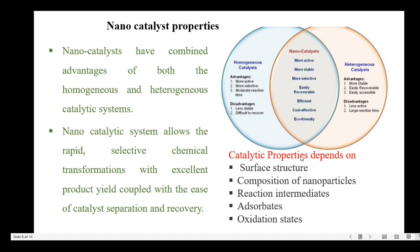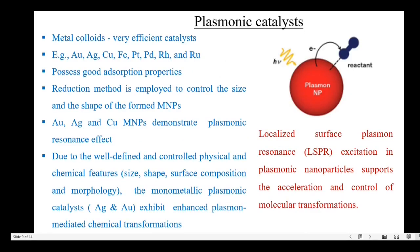The different catalytic properties include differences in surface structure, composition of nanoparticles, reaction intermediates, adsorbates and oxidation states. Based on the nanomaterial used for the catalytic process, the different types of nanocatalysts include carbon nanotube catalysts, metallic nanoparticle catalysts, semiconductor catalysts and nanocomposite catalysts.